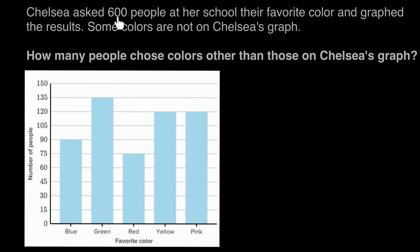But some of these 600 people — like me — had a different favorite color. My favorite color, orange, isn't on the graph. So we're asked how many people, like me, were not graphed — how many people picked a color besides blue, green, red, yellow, and pink? The way we figure this out is to look at the graph and find how many of the 600 people are on the graph, then take that away from 600 to find how many are not on the graph.